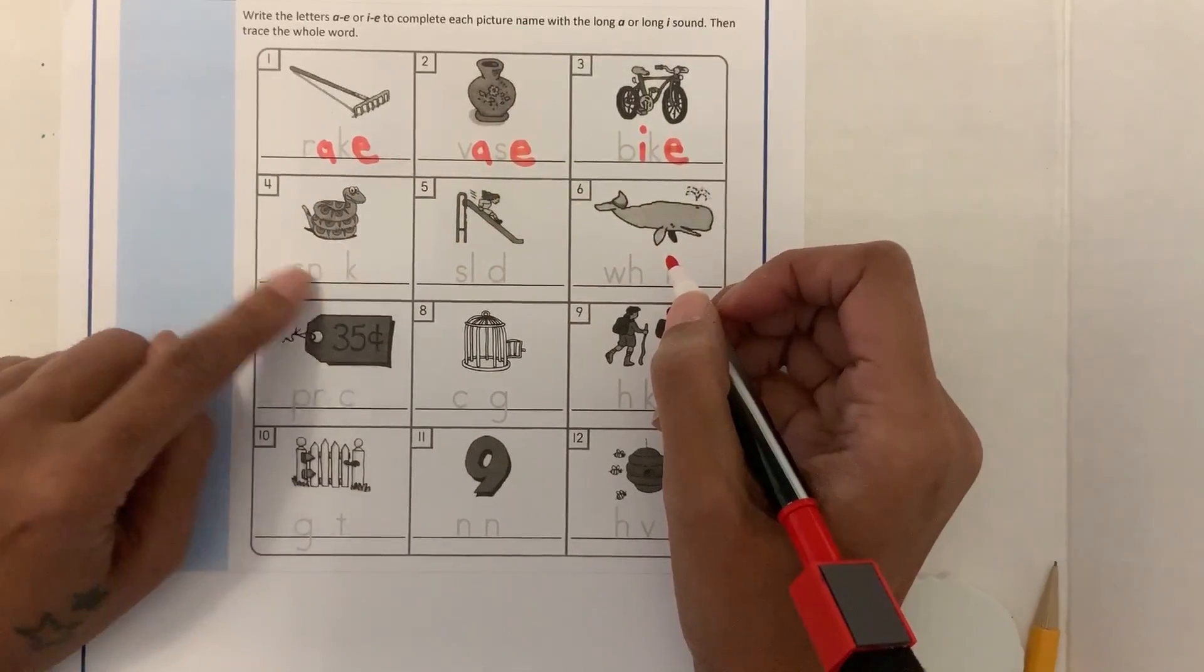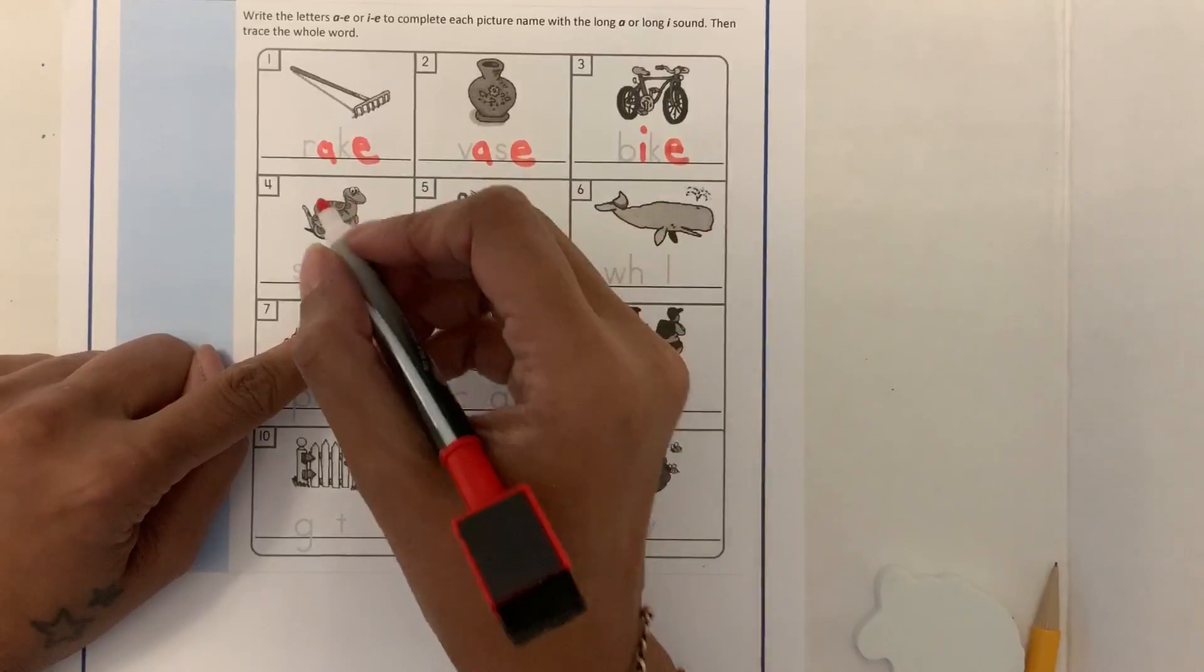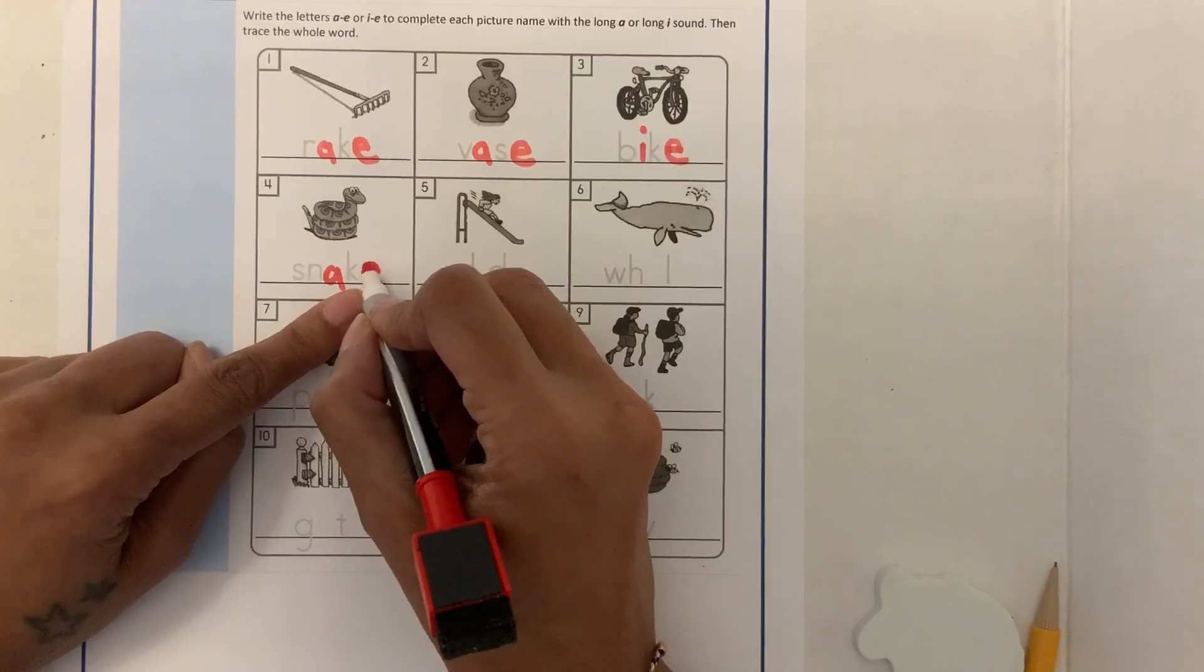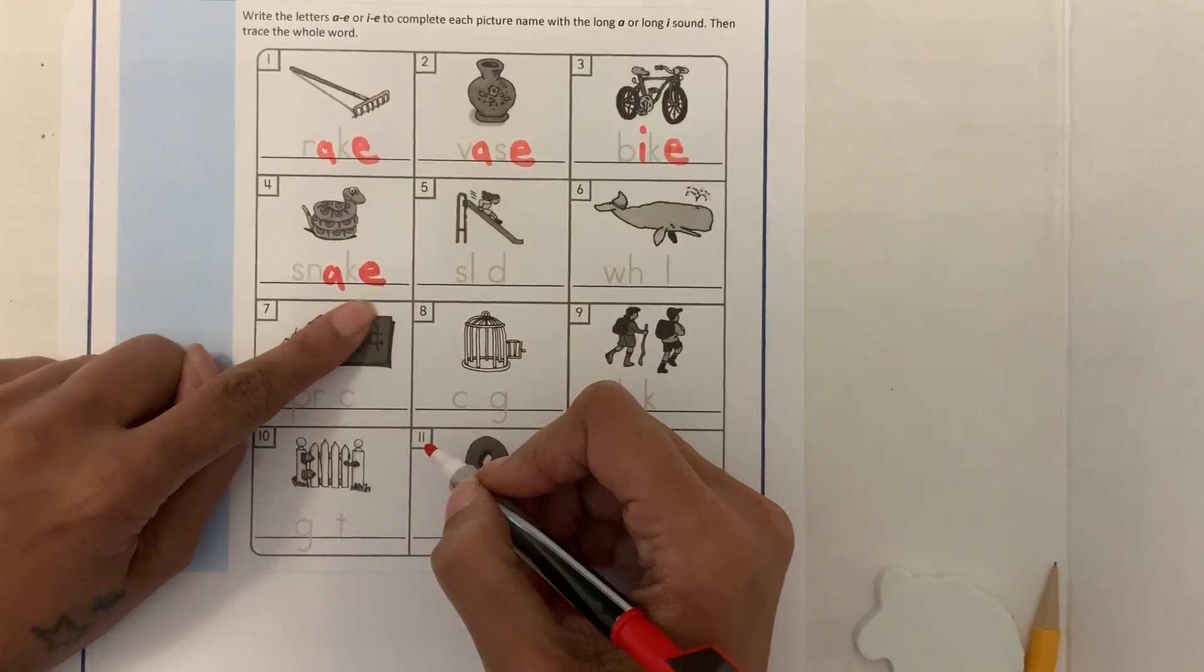Snake. You hear the A. And what do I add? You're right. I add the E. Snake.